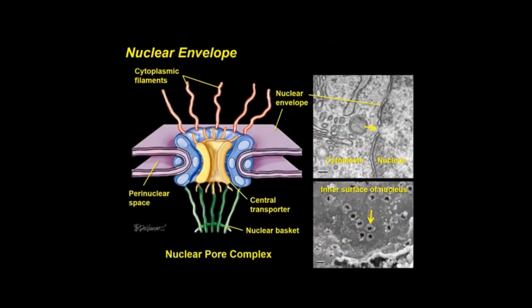The nuclear envelope, which separates the nucleus from the cytoplasm, consists of two parallel membranes separated by a narrow perinuclear space. Viewed by TEM and SEM, the envelope contains nuclear pores about 100 nm in diameter that perforate the two membranes and permit selective bidirectional exchange of small molecules and ribosomal subunits. Nuclear pores have a complex three-dimensional structure.